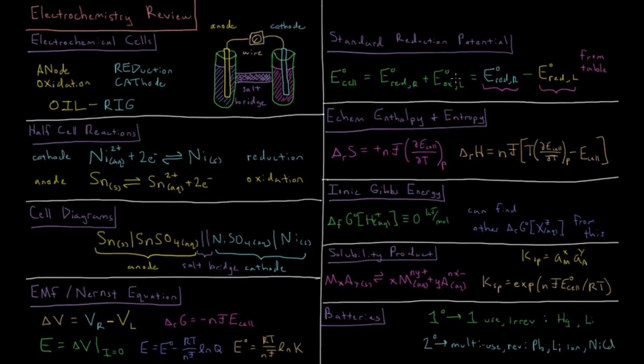But the standard oxidation potential on the left is just equal to the negative of its standard reduction potential. So the standard reduction potential at the cathode minus the standard reduction potential at the anode gives us the standard EMF of the cell. We can look up both of these values from a table depending on the given half-cell reaction at the cathode and anode.